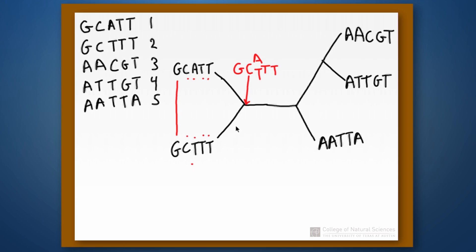For the node connecting species 3 and 4: position 1 both have A, so we put A. Position 2 has A or T — we don't know, so A or T. Position 3 has C or T — again we note C or T. Position 4 both have G, and position 5 both have T, so we put G and T there.